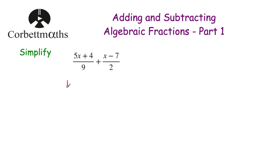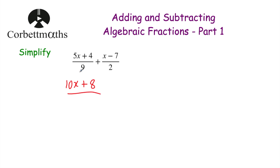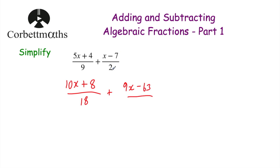If we double the numerator we'll get 10x + 8, and if we double the denominator, well doubling 9 would be 18. So we've doubled both the numerator and denominator for the first fraction. Now for the second fraction, we want to get 18 on the denominator. To get from 2 to 18 we multiply by 9. So we multiply both the numerator and denominator by 9: 9 times x is 9x, and 9 times −7 is −63. And 9 times 2 is 18. So we've now got two fractions with the same denominators.